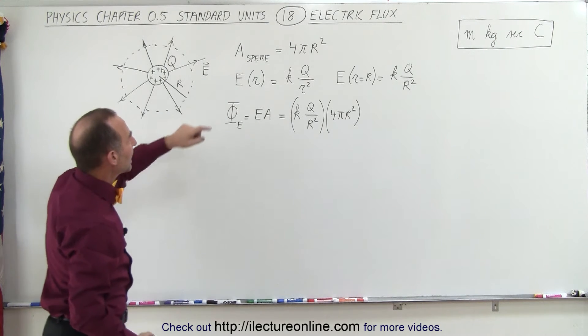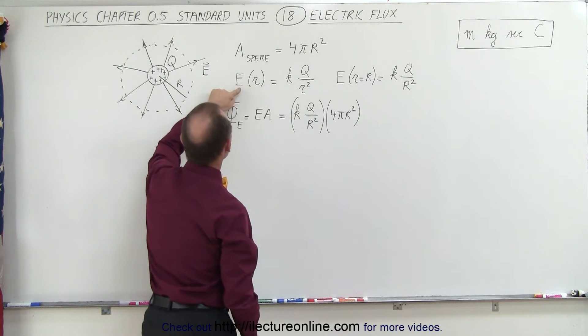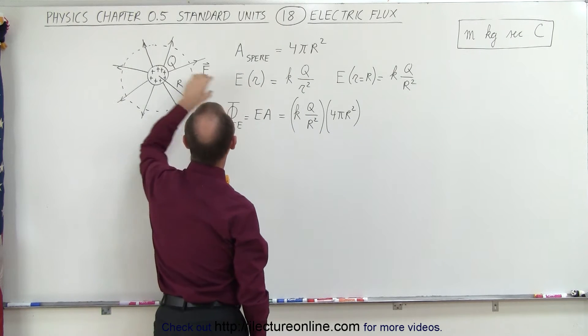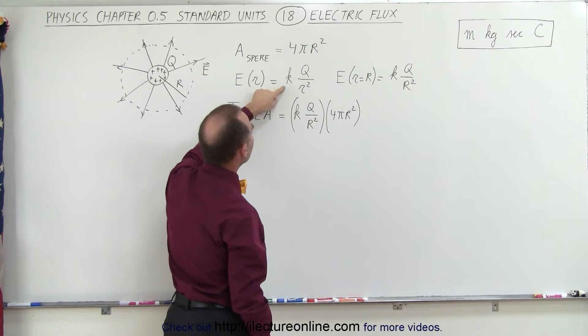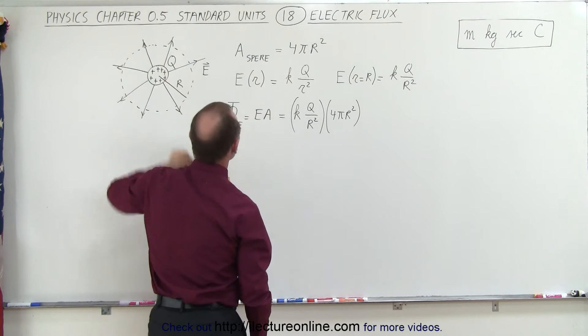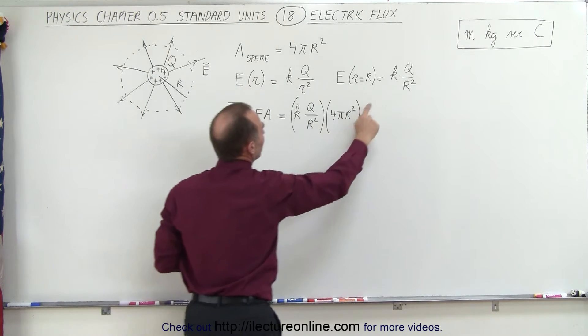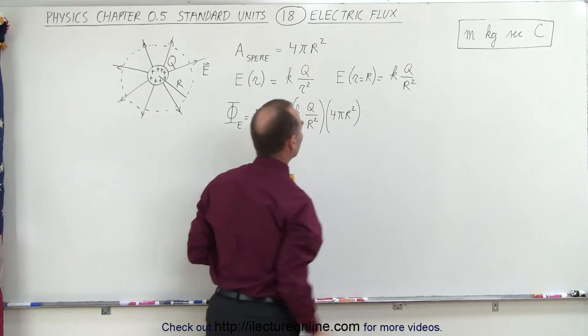So first of all, the area of the sphere, if we forgot, is equal to 4πr². And the electric field, as a function of distance away from a charge object, is equal to kq over r², where q is all of the charge on the object. And if we let r equal the radius of that sphere, then it becomes kq over large R².